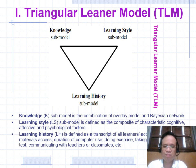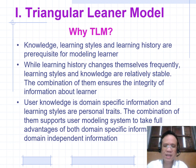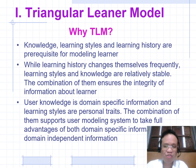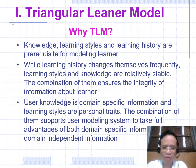Learning History records the duration of computer usage, doing exercises, taking examinations, doing tests, communication with teachers, and so on. Knowledge, Learning Style, and Learning History are the required components for a modern learner model. While learning histories change freely, learning style and knowledge are very stable. The combination of them ensures the integrity of information about the learner, supporting user models to take full advantage of both domain-specific and domain-independent information.